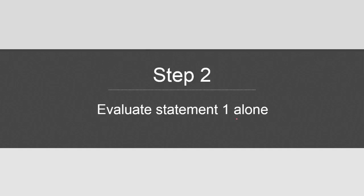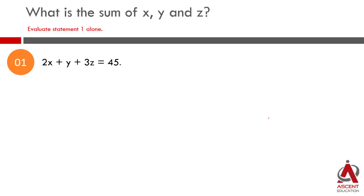With this clarity, we will move on to statement one. In evaluating statement one, initially start evaluating statement one alone. If one is sufficient, then we will move on to statement two. Let us not look at both the statements together. Here is statement one: 2x plus y plus 3z is equal to 45. We want an answer for x plus y plus z. But what we have is 2x plus y plus 3z. This is actually x plus x plus z plus z. So statement one alone, we will not be able to come up with an answer.